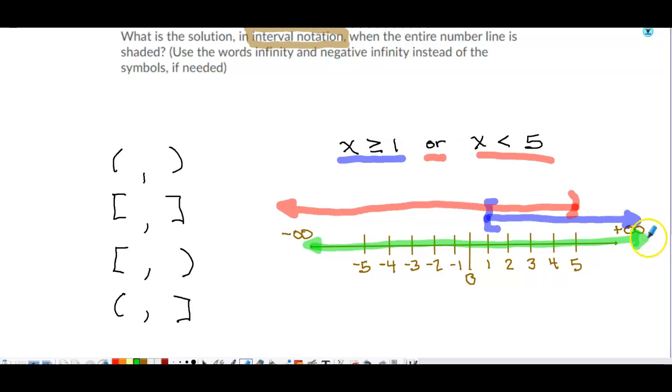However, this is not interval notation. Interval notation is when we do this over here. So we need to know that any time our beginning number is an infinity, we use a parenthesis because infinity is not a number. It's an idea that there's always another number.